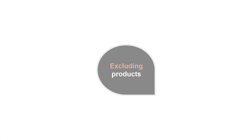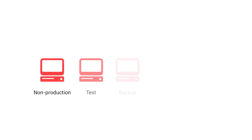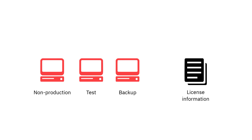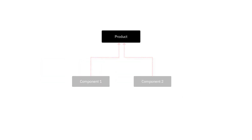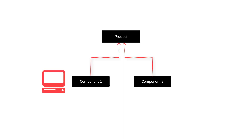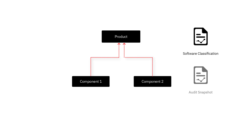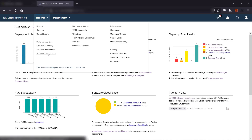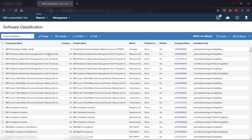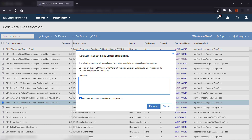Excluding products. Exclude a product when it is installed on a non-production, test, or backup computer and the license information specifies that the product should not contribute to license metric utilization under these circumstances. When you exclude the product, all components assigned to it and installed on the selected computer are excluded from metric utilization. Excluded products and their components are still displayed on the Software Classification report and are listed in the Audit Snapshot together with exclusion comments. To exclude a product, hover over Reports and click Software Classification. Select the product, hover over Exclude, and click Exclude Product for Metric Calculation. In the comment field, provide the reason for exclusion and click Exclude.